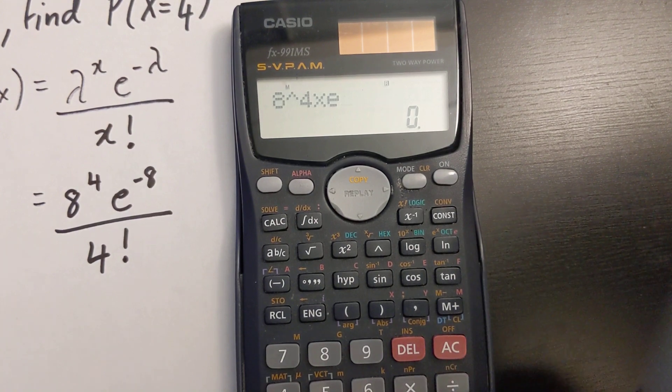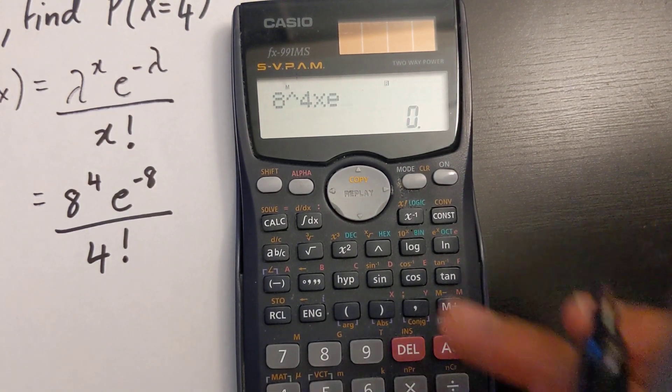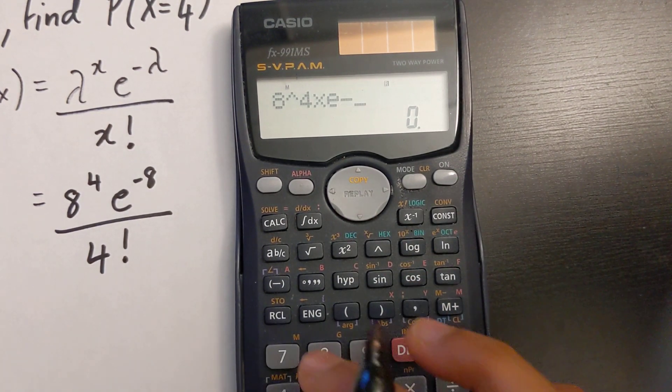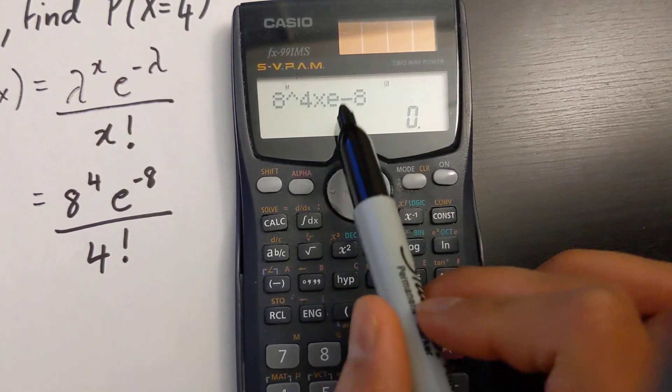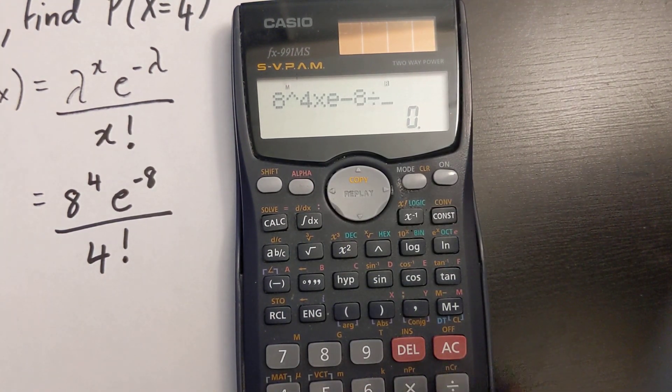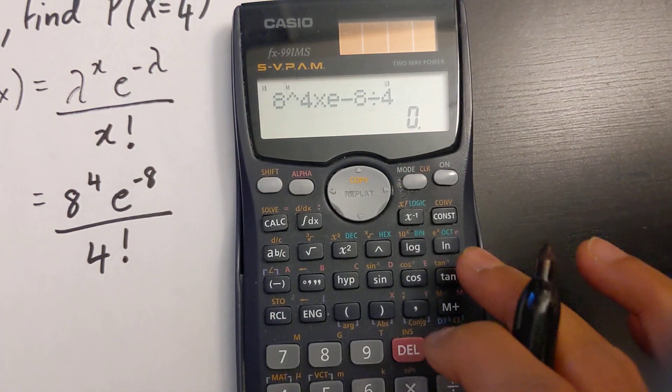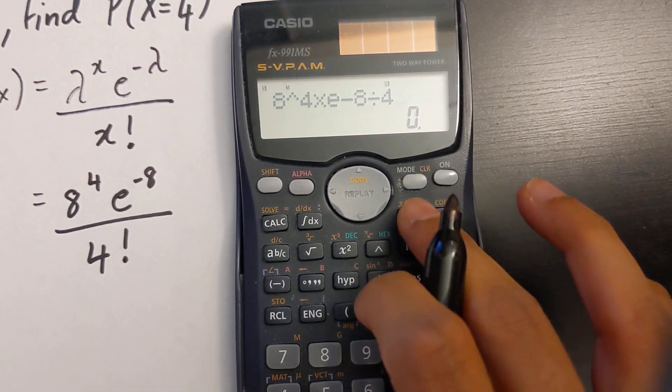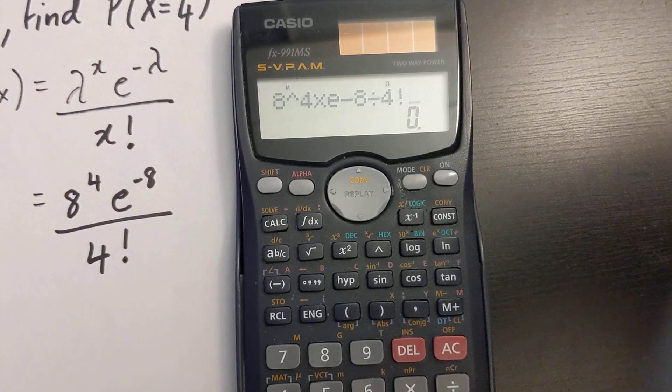So e in this specific calculator I don't need to put the exponent button. I can just type e negative 8, that means e to the power of negative 8, and then divide it by 4 and then shift and this button right here is my factorial button.